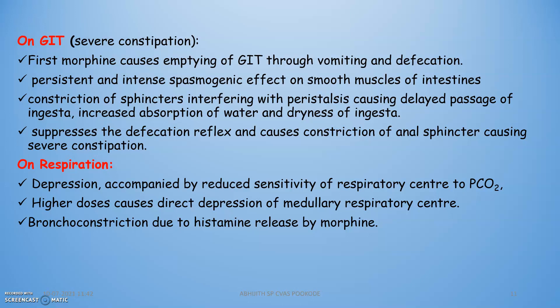On respiration, there is respiratory depression accompanied by reduced sensitivity of the respiratory center to carbon dioxide. Normally, respiration is triggered when CO2 concentration rises, but morphine reduces this sensitivity, so respiration can cease at overdose, leading to death from lack of oxygen. Severe bronchoconstriction also occurs due to histamine release induced by morphine.